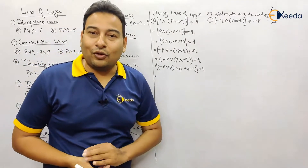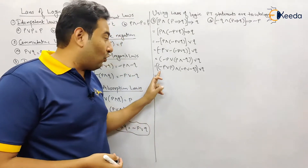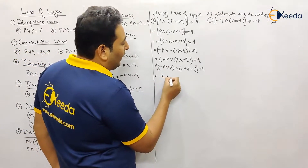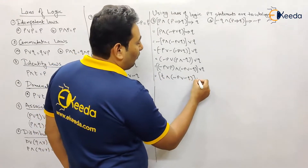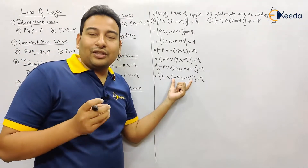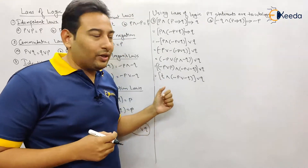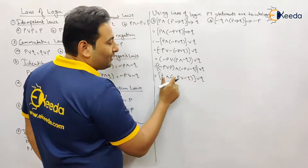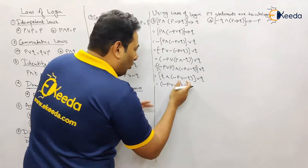Applying distributive law gives: (negation p or p) and (negation p or negation q), and finally or q. Now, negation p or p — when will this be false? If both are false, but one is always the complement of the other, so this value is always true. Since it's true and'd with the next expression, the overall value equals negation p or negation q, or q.